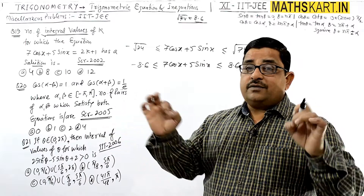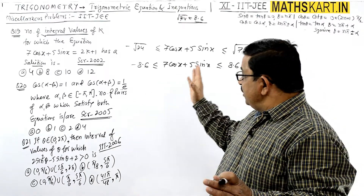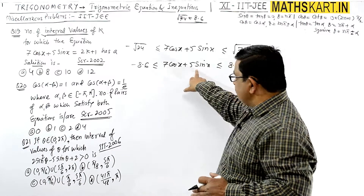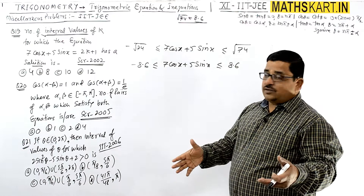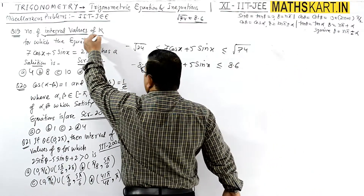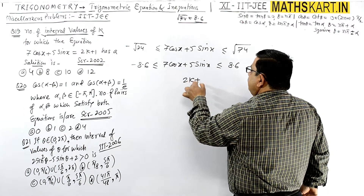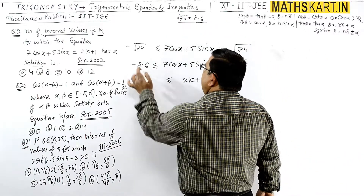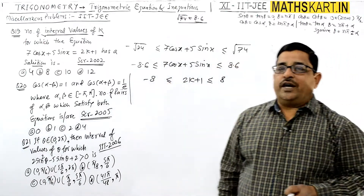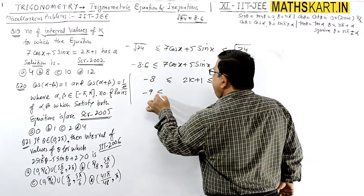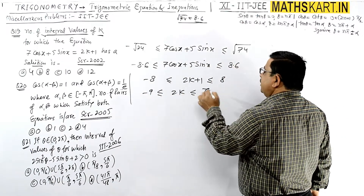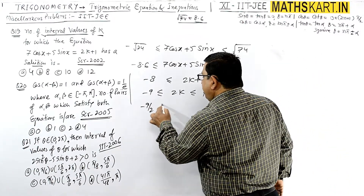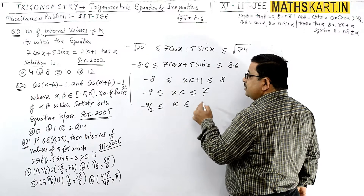Since we need only integral values, in the second step we will clear and perfect the inequality. About the number of values of k: we have 1k minus minus 9, this is 2k and this is 7, so 2k can lie between minus 9 to 7. If you divide by 2, then k lies between minus 9/2 and 7/2.